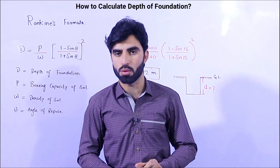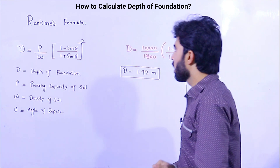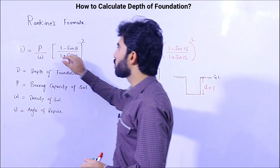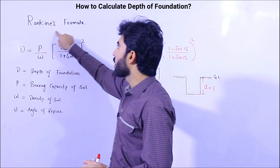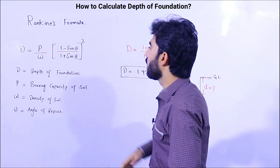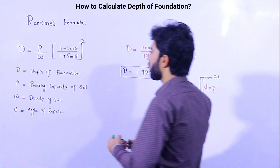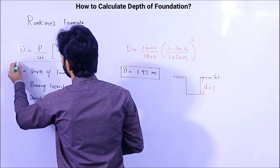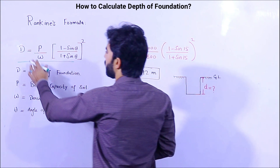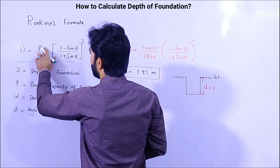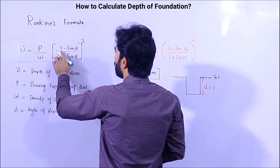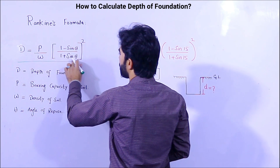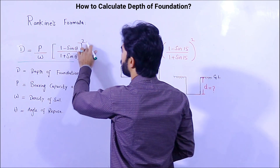To find the depth of foundation we will use Rankine's formula. You can see this is the Rankine formula: D is equal to (p / w) multiplied by ((1 - sin θ) / (1 + sin θ)) squared.